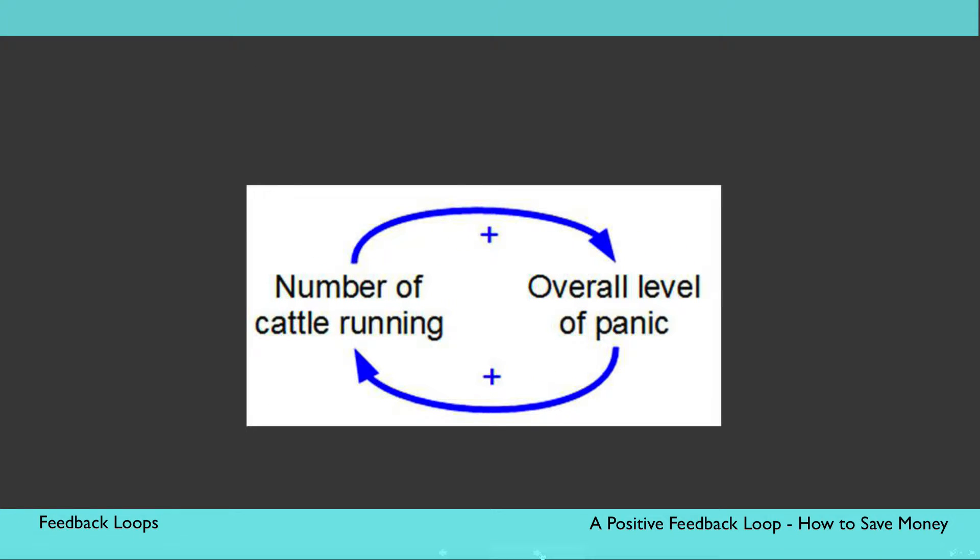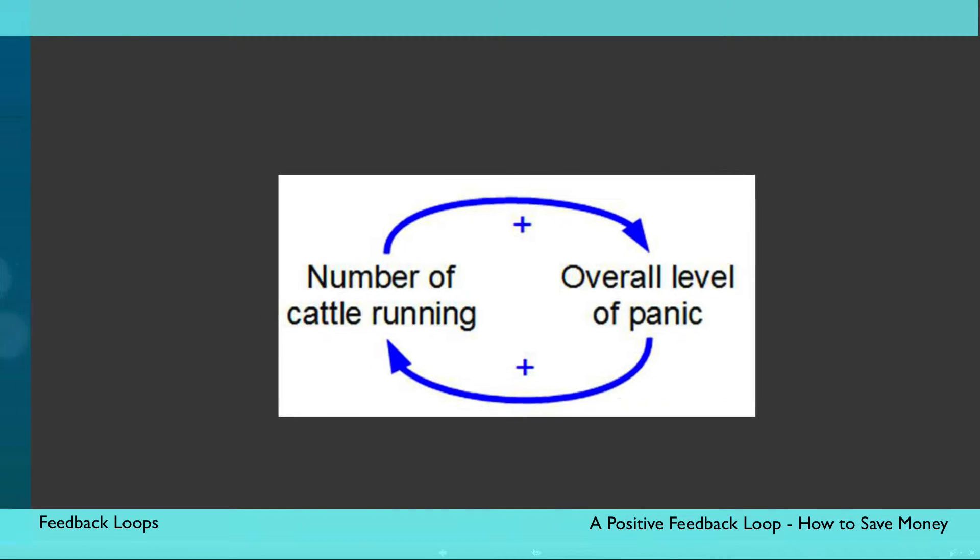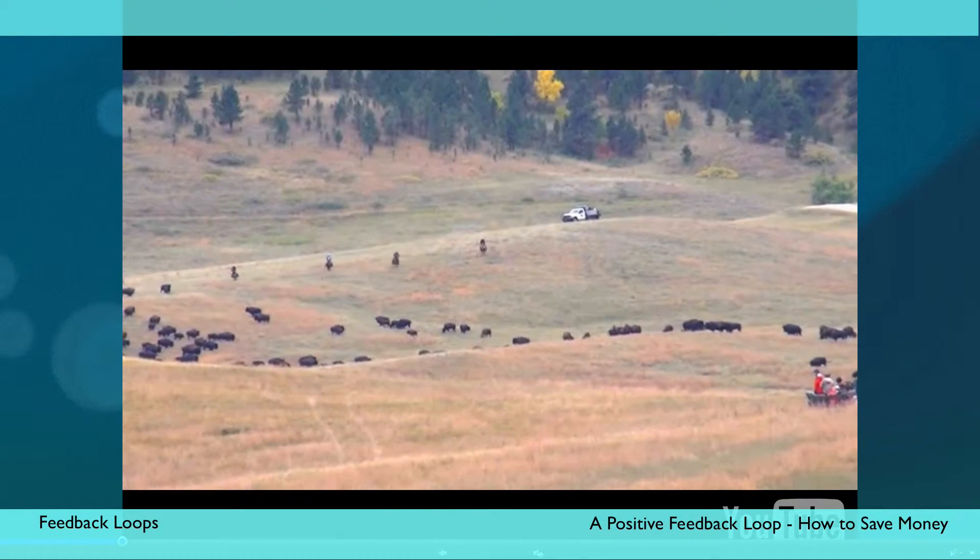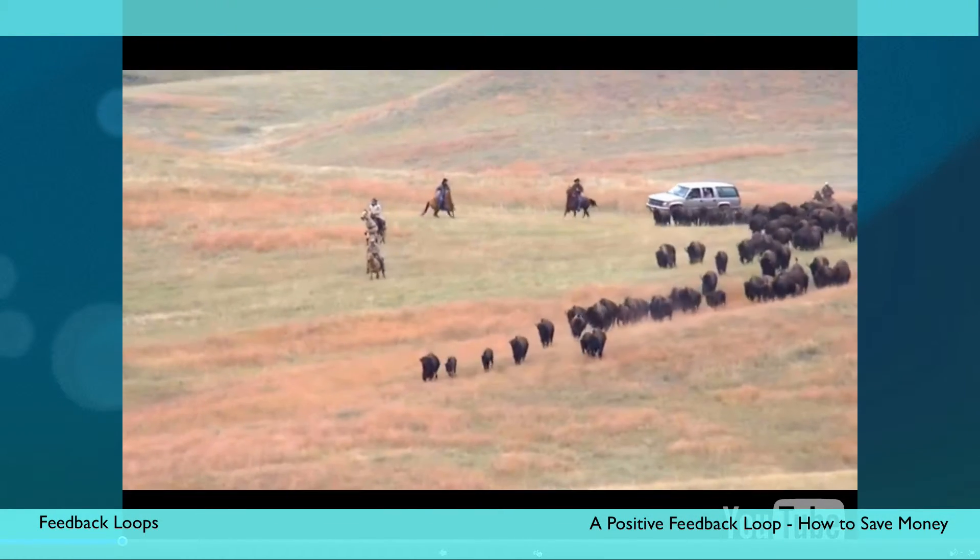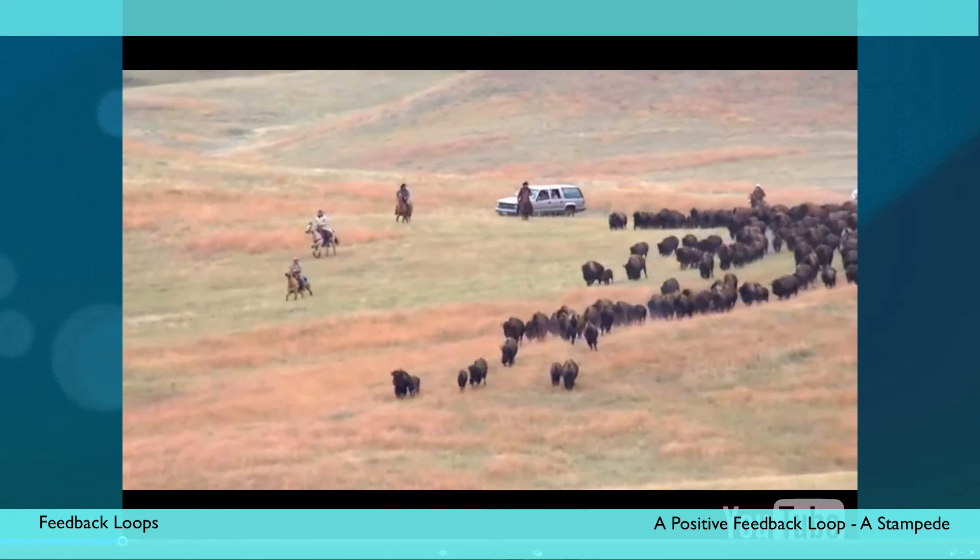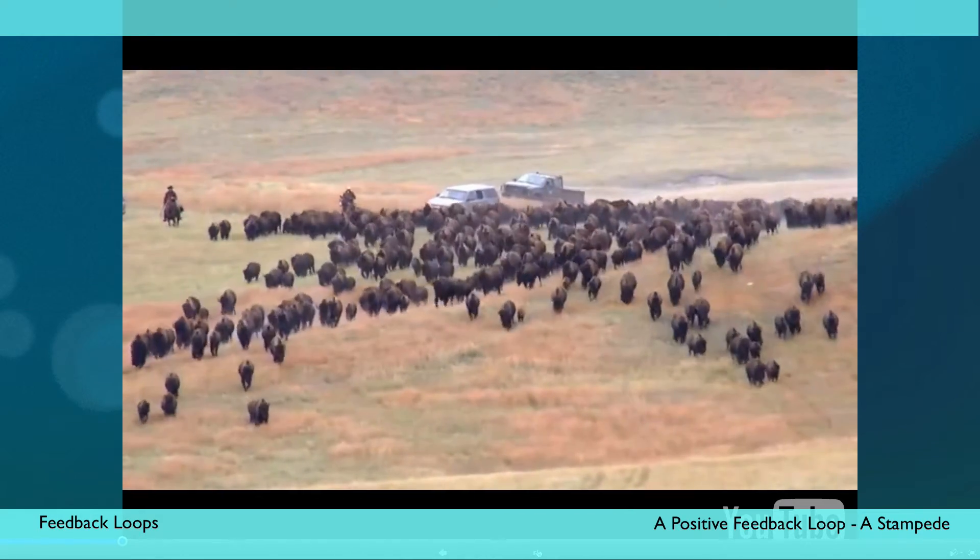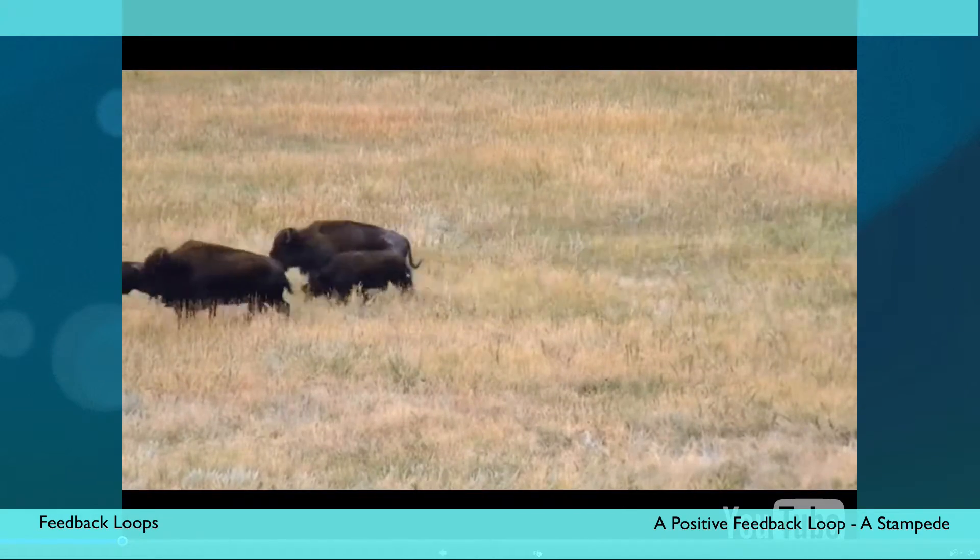The stampede is another example of positive or reinforcing feedback loop in action. In this case, the diagram of this loop includes the number of running animals and the level of panic in the group. The stampede starts with a single animal running, which triggers a panic in the others, causing more animals to run and so on. As time progresses, the panic spreads to even more members of the herd, increasing the number of running animals even more.